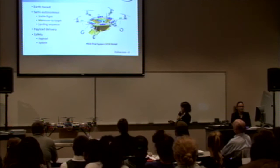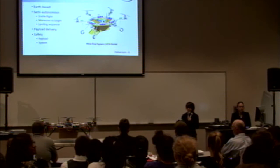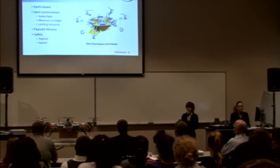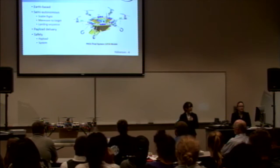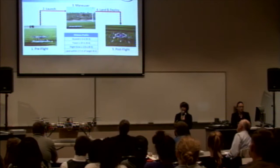When we began the concept of Paul last semester, as you can see here in the CATIA model and in the fully fabricated system, we set several objectives and goals: that it would be earth-based, semi-autonomous, maintaining a stable flight, and maneuver to a target location, and perform a landing sequence. Upon performing the landing sequence, it would deliver a payload, while maintaining safety to the system and the payload throughout the entire mission operations timeline.